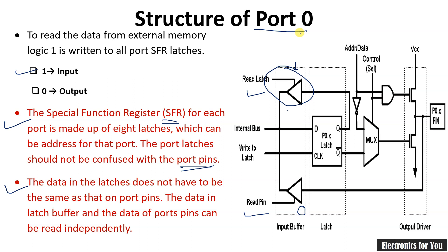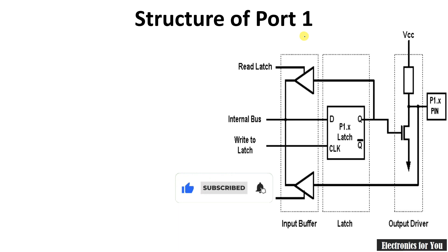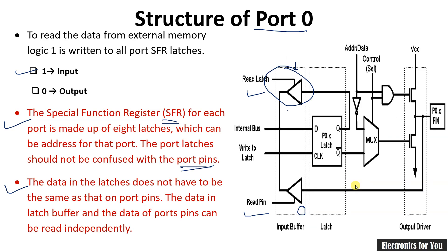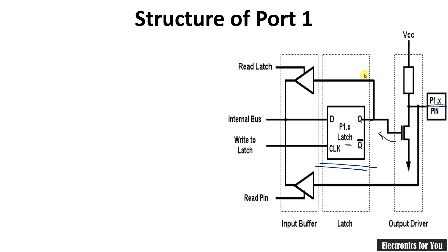Port 1 is the only port of 8051 used solely for input and output. Here you can see it only has the output of the transistor connected to the latch. This is labeled P1.x, meaning it is port 1 and there are similar pins for the remaining bits. Previously, a MUX was used because port 0 was a multi-function port, whereas port 1 is a simple I/O port, so no MUX is used.